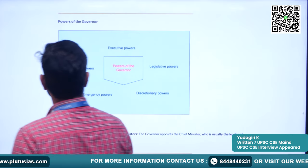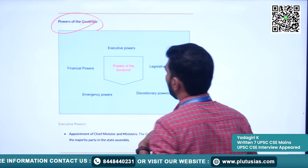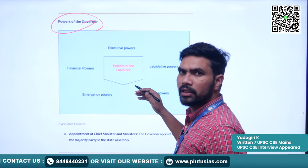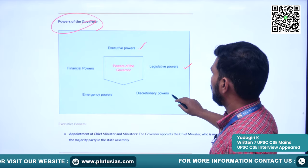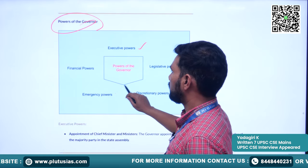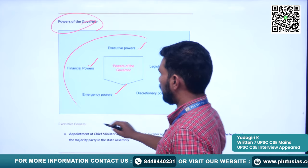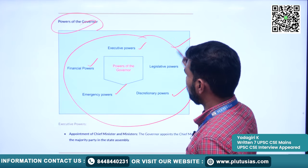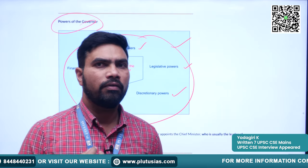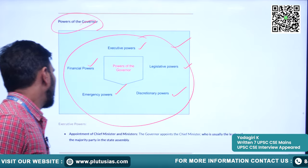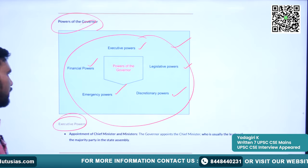The powers exercised by the Governor can be divided into executive powers, legislative powers, discretionary powers, emergency powers, and financial powers. We will try to understand these powers under five categories.